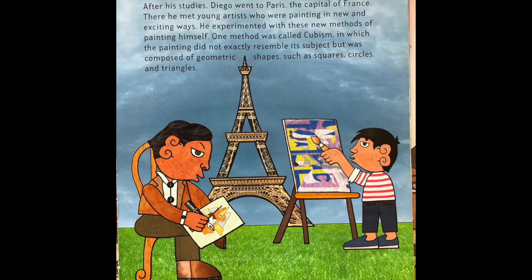After his studies, Diego went to Paris, the capital of France. There he met young artists who were painting in new and exciting ways. He experimented with some of these new methods of painting himself. One method was called cubism, in which the painting did not exactly resemble its subject, but was composed of geometric shapes such as squares, circles, and triangles.